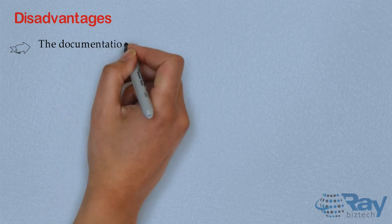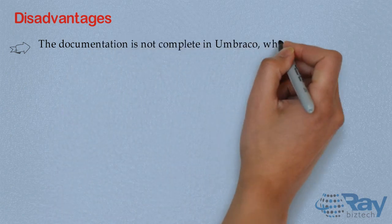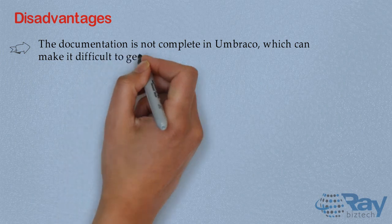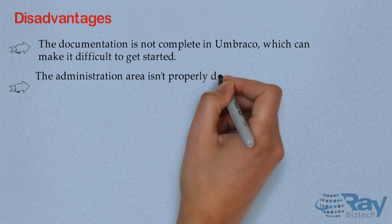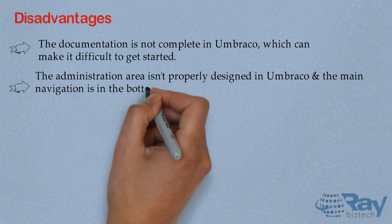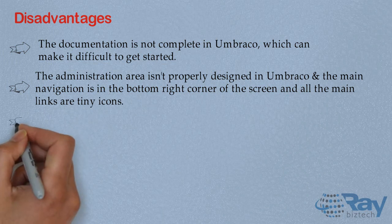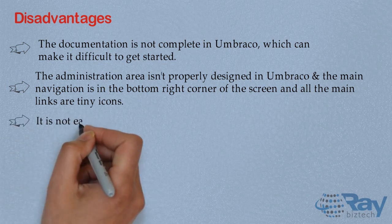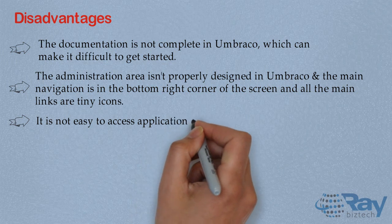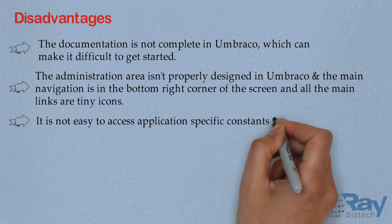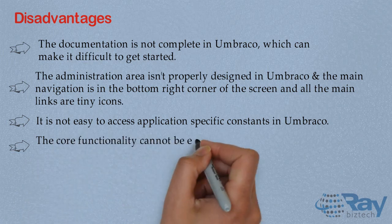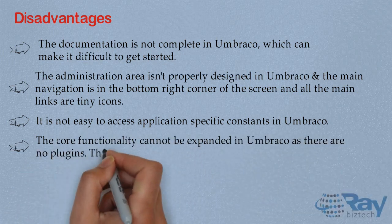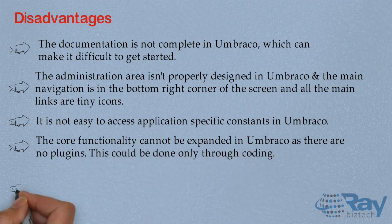Disadvantages. The documentation is not complete in Umbrako, which can make it difficult to get started. The administration area isn't properly designed in Umbrako — the main navigation is in the bottom right corner of the screen and all the main links are tiny icons. It is not easy to access application-specific constraints in Umbrako. The core functionality cannot be expanded in Umbrako as there are no plugins; this could be done only through coding.